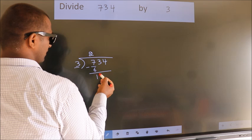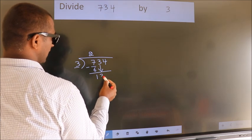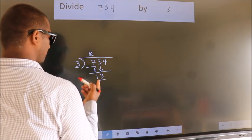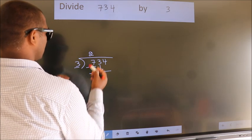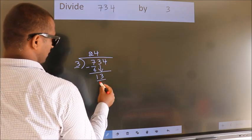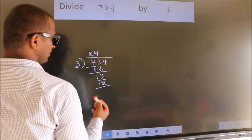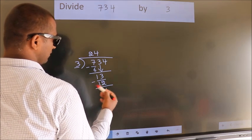After this, bring down the beside number. So, 3 down. So, 13. A number close to 13 in the 3 table is 3 times 4, which is 12. Now we subtract. We get 1.